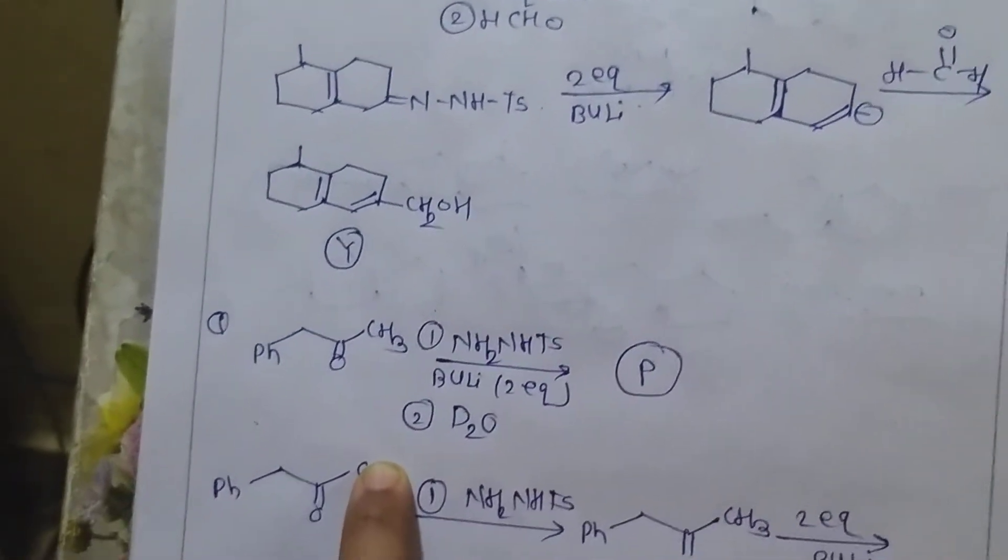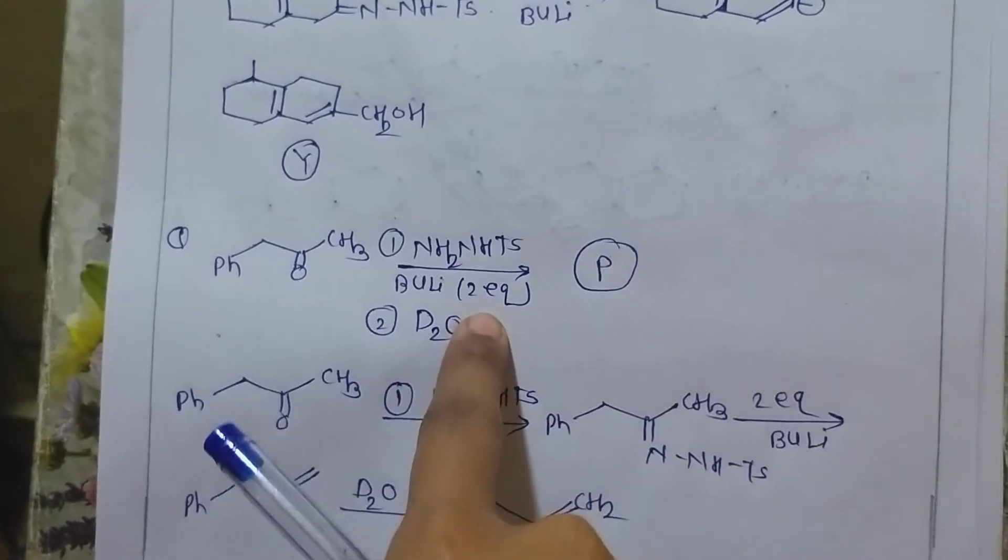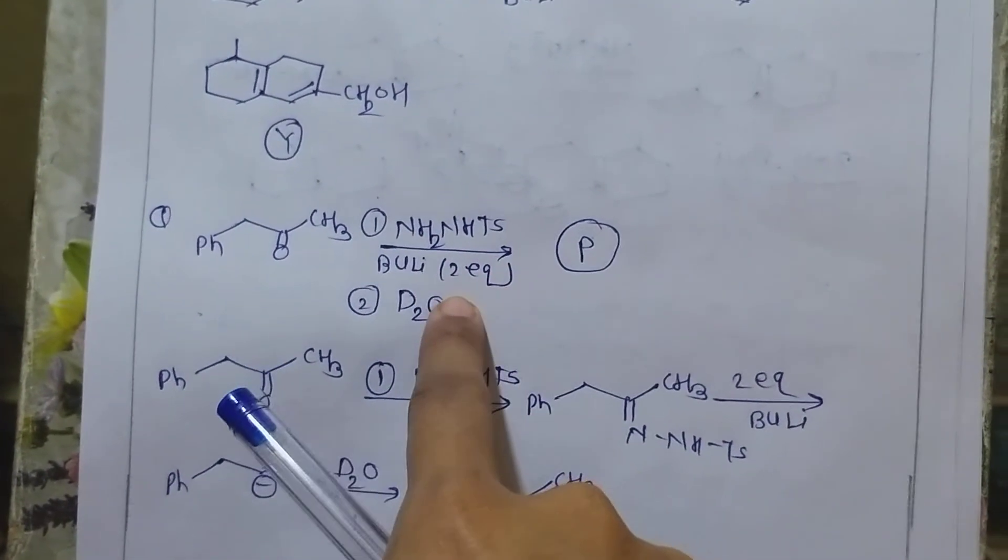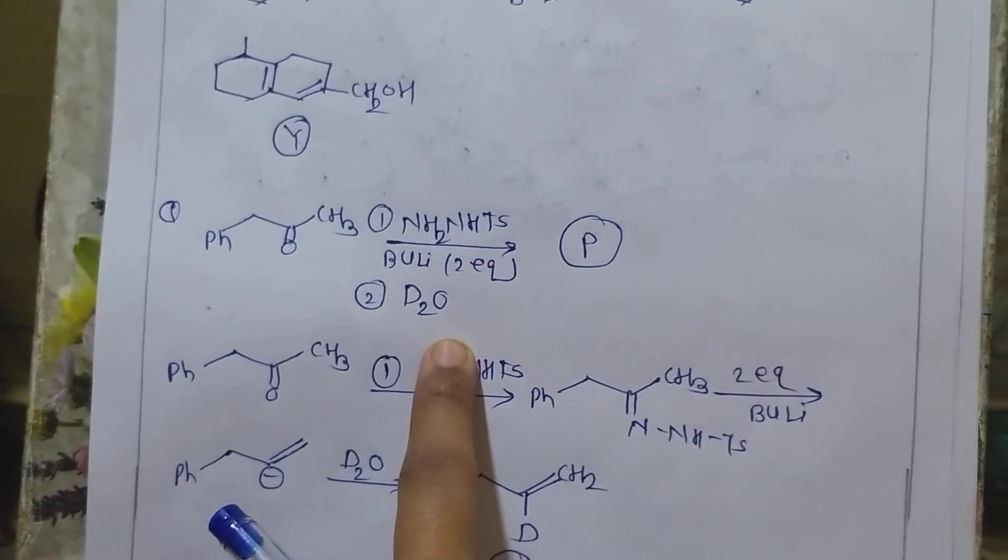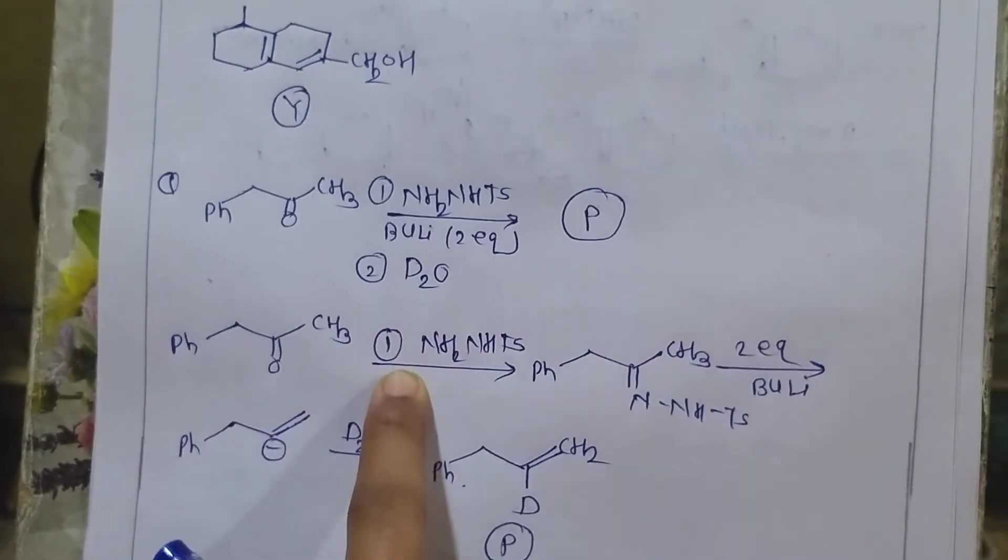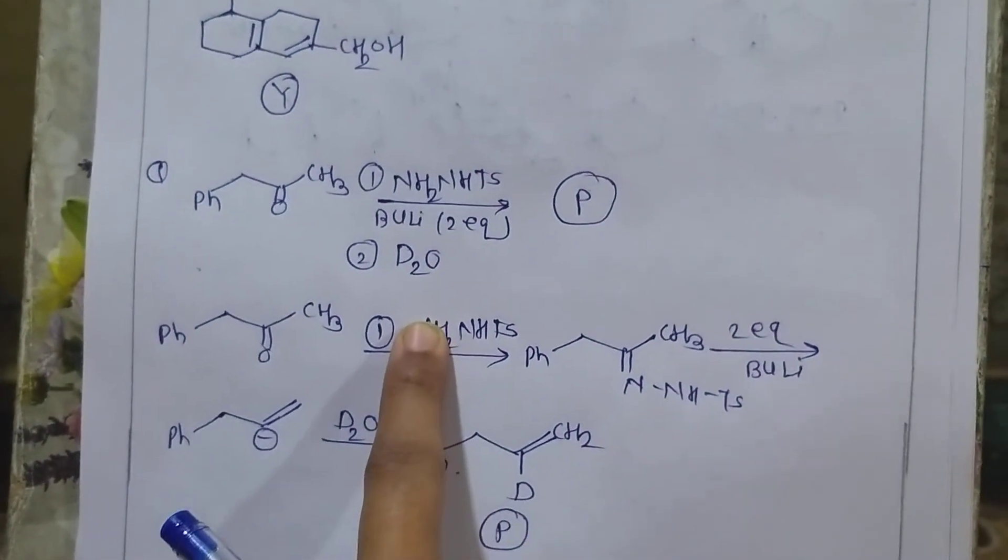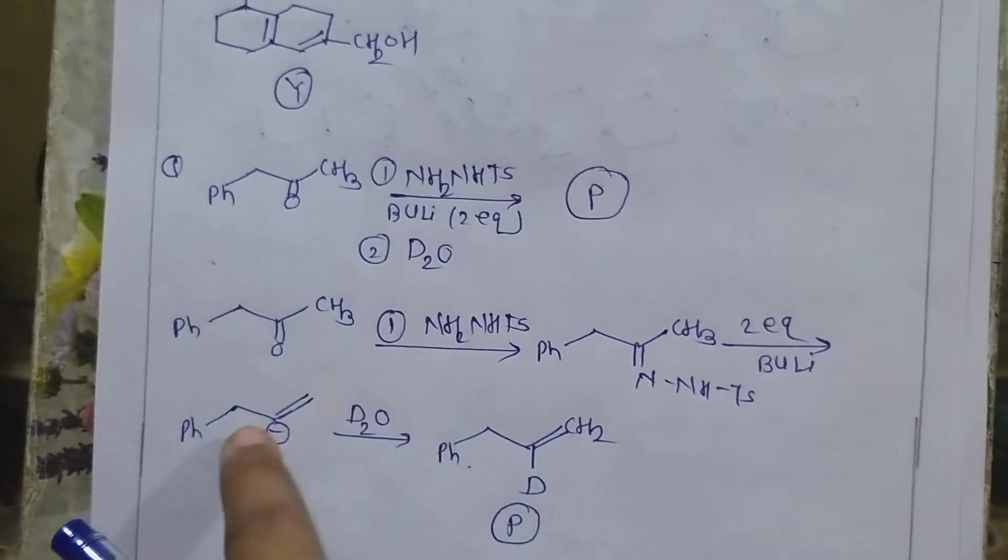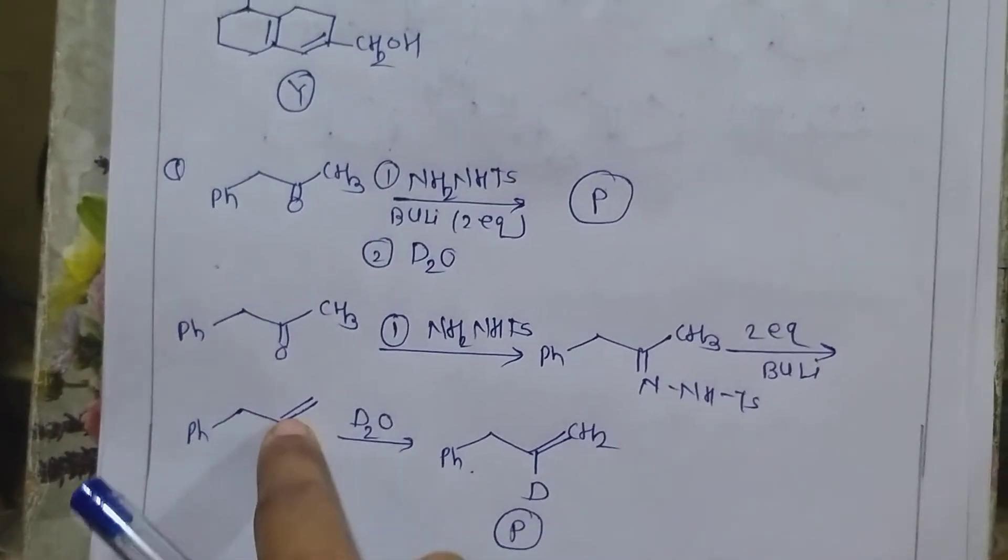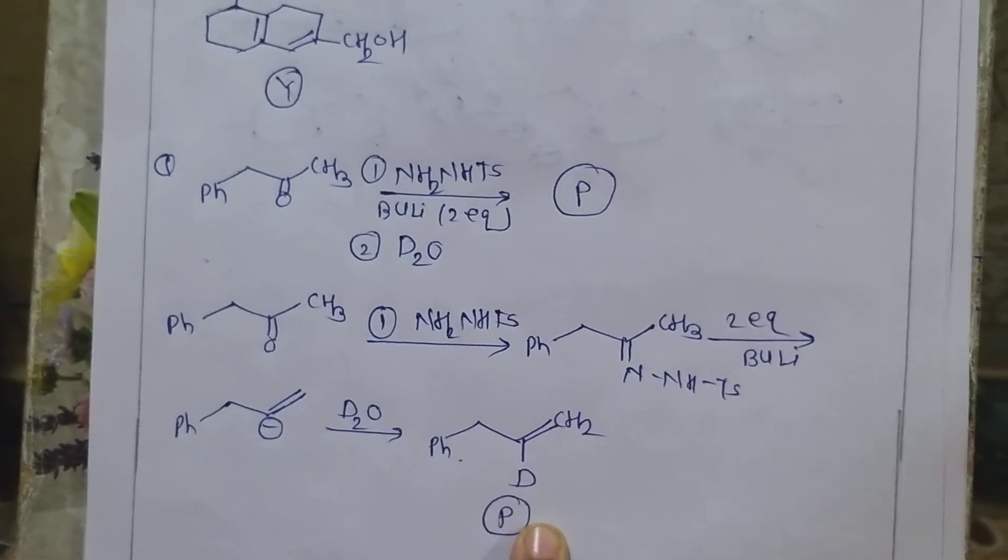D2O to form less substituted alkene. Now if we talk about one simple example, it will react with NH2-NHTS followed by butyllithium and deuterium oxide. We know that this is one of the Shapiro reaction and major product of Shapiro reaction is less substituted alkene. It will react with D2O to form less substituted alkene.